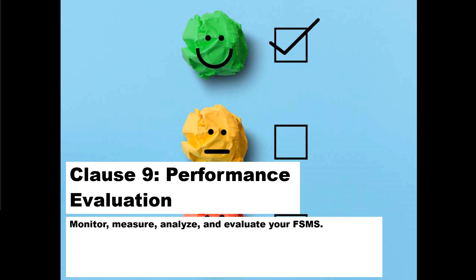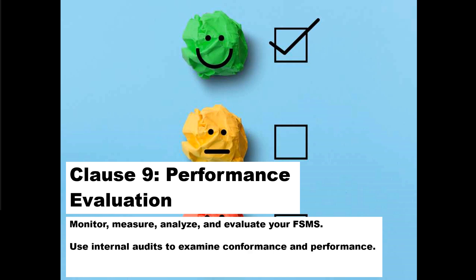Clause 9 looks at performance evaluation. Once you've set up your system, you have to monitor it. Is it included in your internal audit program? Are you checking that your prerequisite programs are working? Are you checking that suppliers aren't having food safety problems? Are you carrying out management reviews to determine whether your food safety management system is effective? All of that is covered under clause 9.